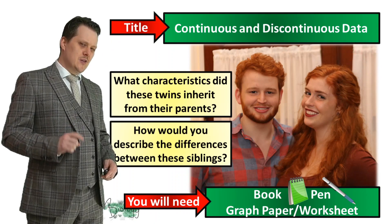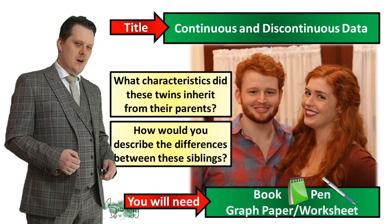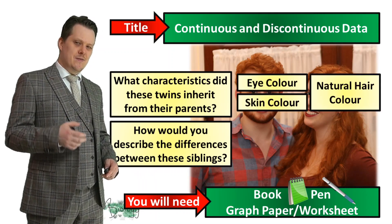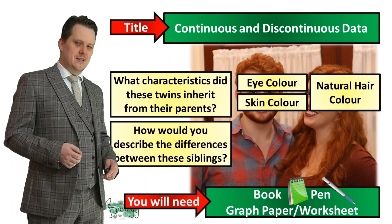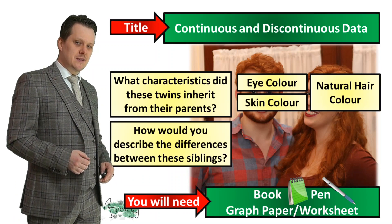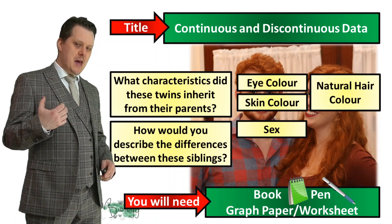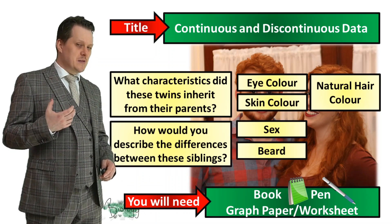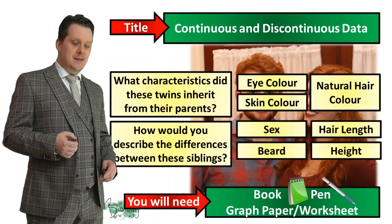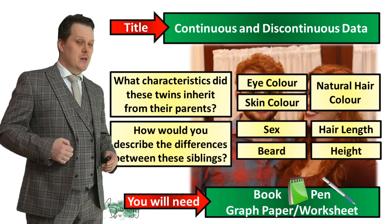Okay, are we all done? So what characteristics did these twins inherit from their parents? Well they've got the same eye colour, the same skin colour, and the same natural hair colour. How would we describe the differences between these two siblings? Well they are different sexes — one's a male, one is a female. One has a beard, one doesn't. They've got different hair lengths and they are different heights. There is variation even between these siblings.